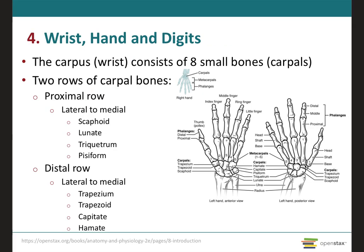The wrist is made up of eight bones. We have the proximal row, which is the row that will articulate with the radius and the ulna. And then we have the distal row, which will articulate with the bones of the hands, known as metacarpals. Each row will have four bones.